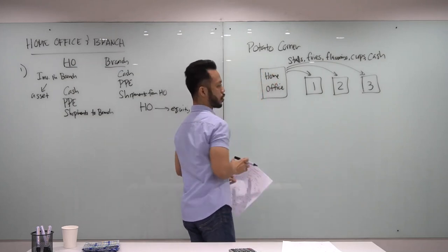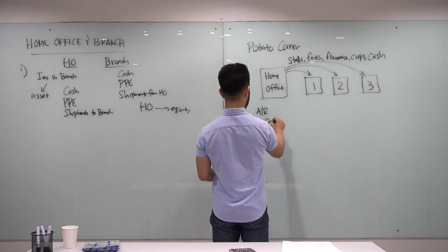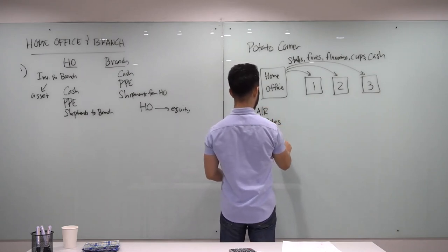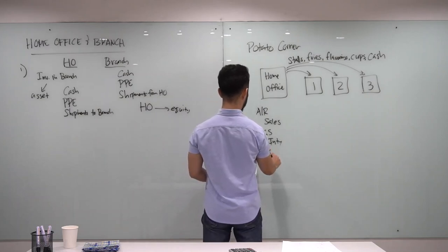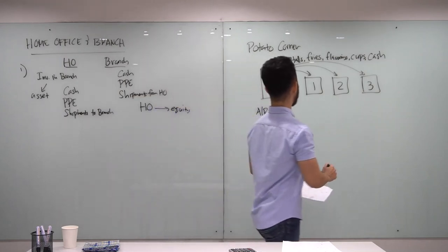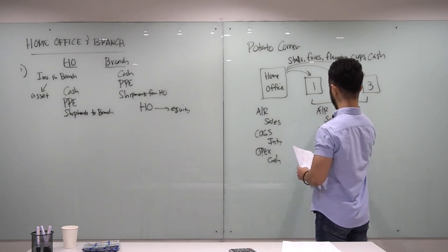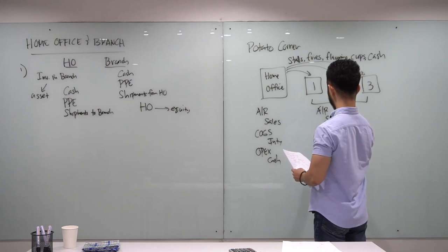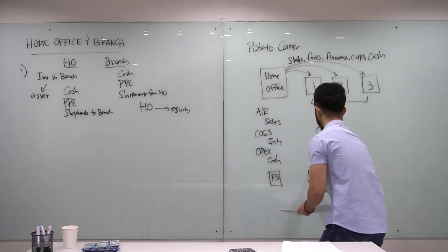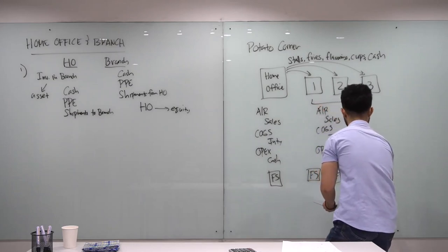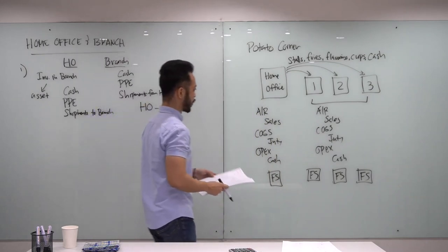Since the branches are now established, they will start operating. The home office has its own sales operations, so the journal entry is: debit AR, credit Sales; debit Cost of Goods Sold, credit Inventory; debit OPEX, credit Cash. The branches also have their own separate books and financial statements, and they record the same type of entries throughout the year.